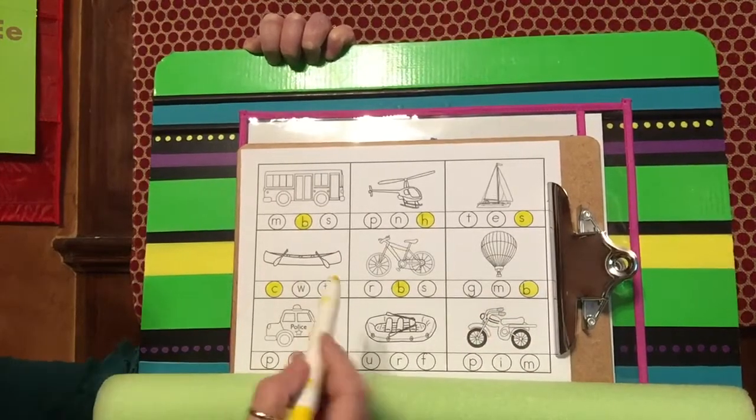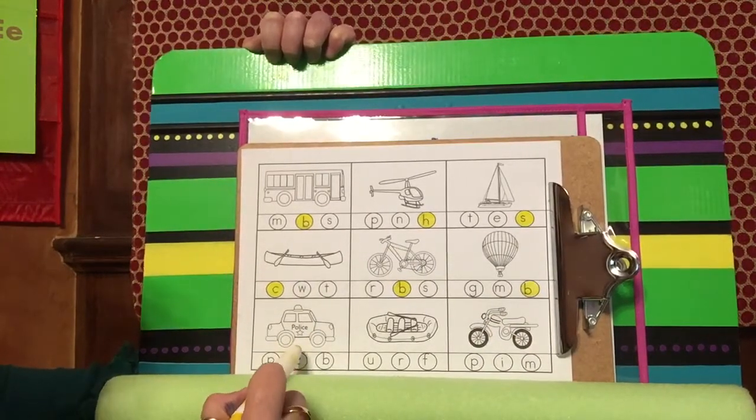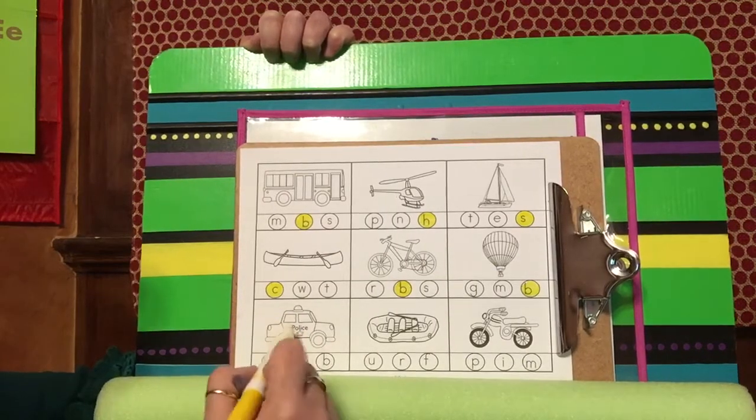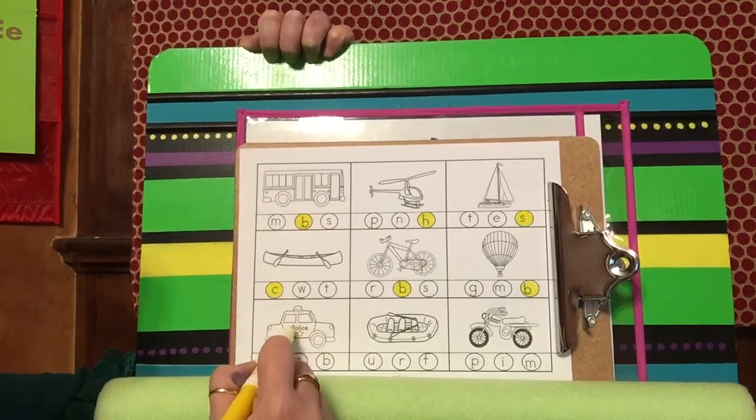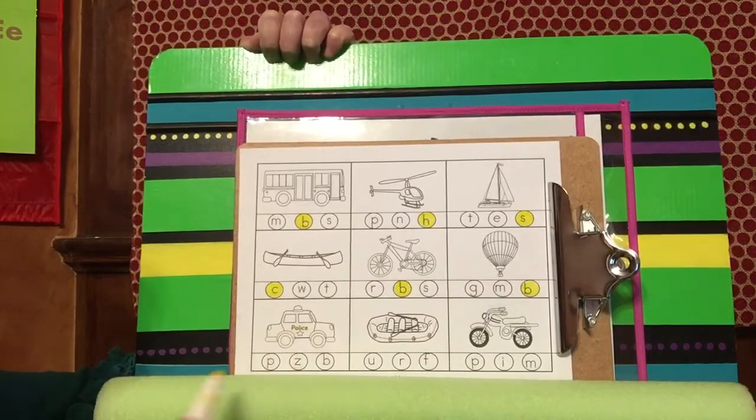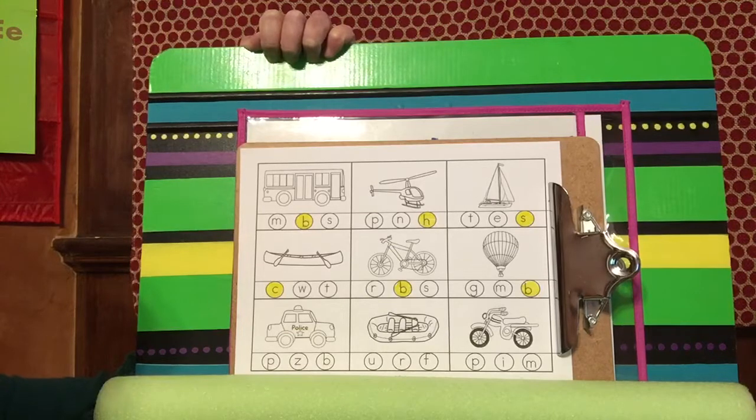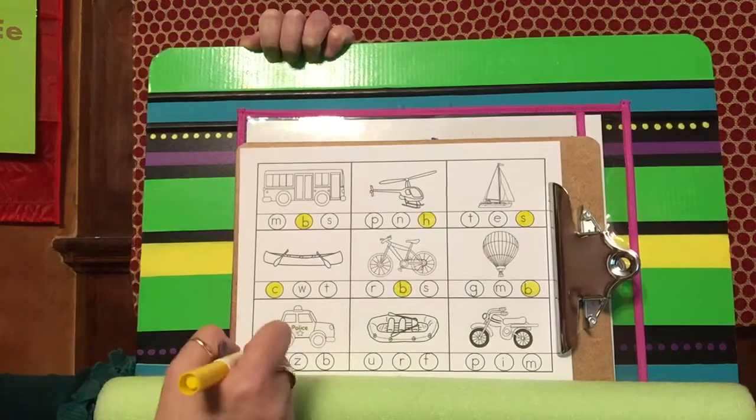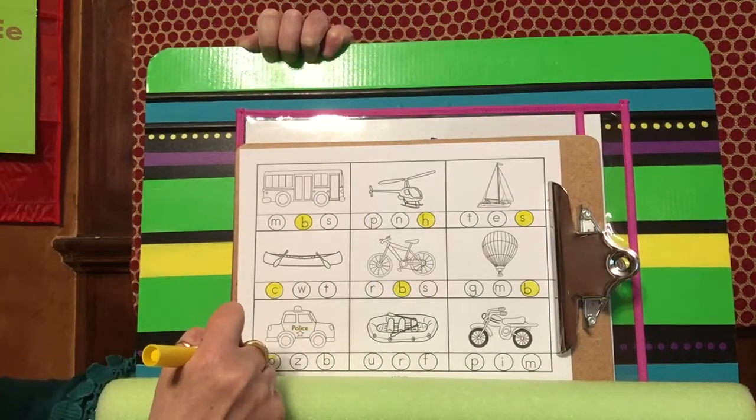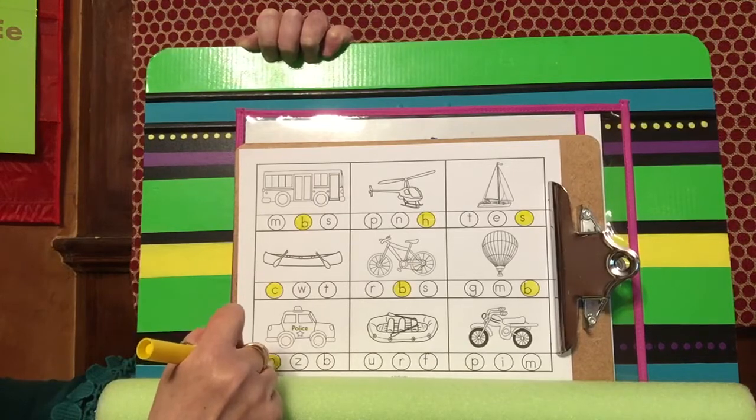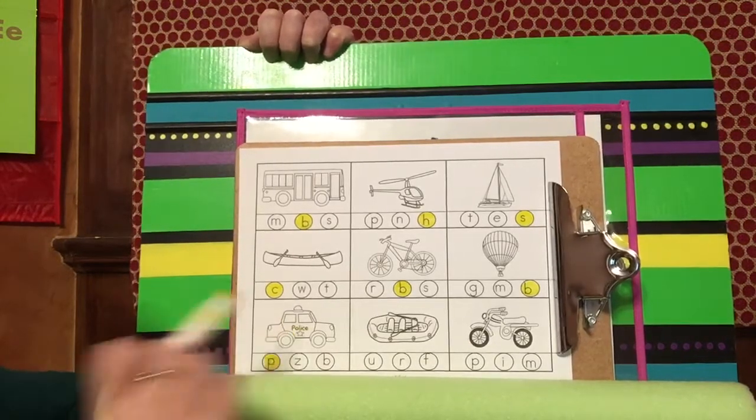Now this one right here is a special kind of car. It says right here police with a star. Police car starts with, you're right, our letter P, so I will color in the P. And the police car travels on land.